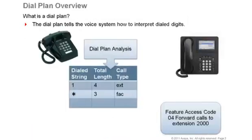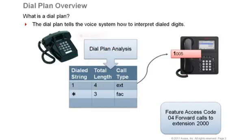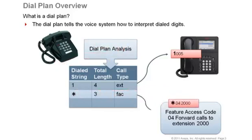What is a dial plan? The dial plan tells the system how to interpret dial digits. In this example, when a user dials one, it looks at the dial plan analysis table and sees that the first digit of one is used for an extension. If the user had dialed the star or asterisk, the system would look into the dial plan analysis table and see that it is going to be used for a feature access code.